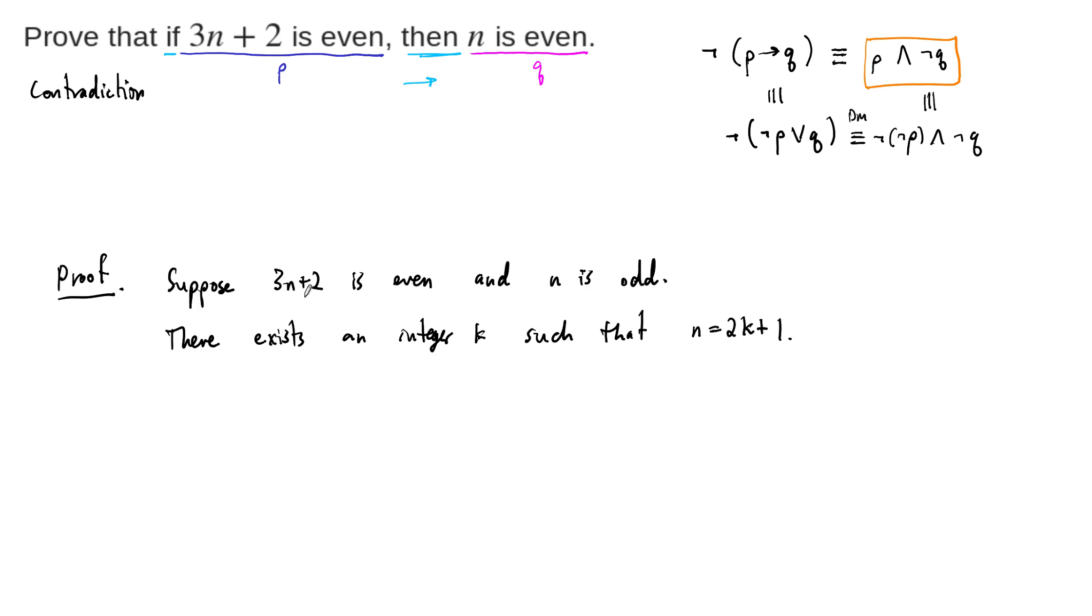Plug that in for the other one and see what happens. So then 3 times n plus 2 is the same as 3 times 2k plus 1 plus 2. This is 6k plus 3 plus 2, which is 6k plus 4 plus 1, which equals 5. That's the same.